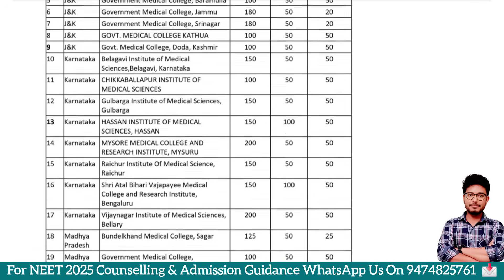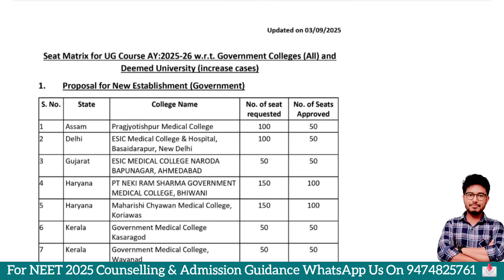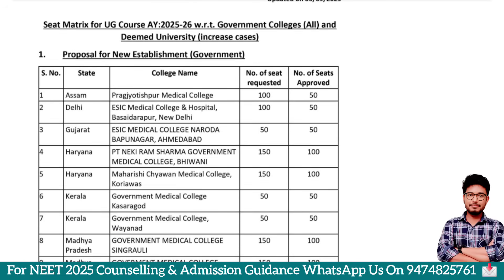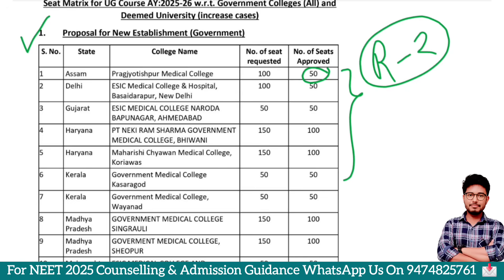College-wise, this academic year will see an increase in government seats. The government will increase the seats. Ultimately, each student is established in the college, which is clearly mentioned. I have been saying this academic year precisely. So this is actually Round 2. There is a certain medical college that is established, and this medical college has the same capacity.